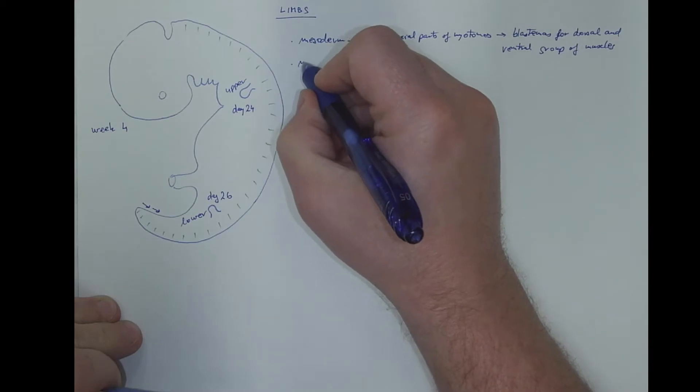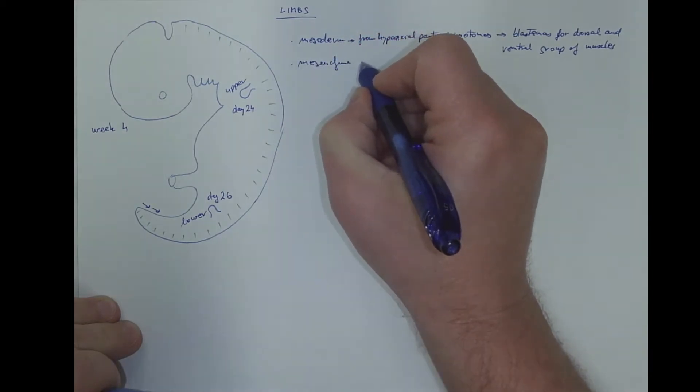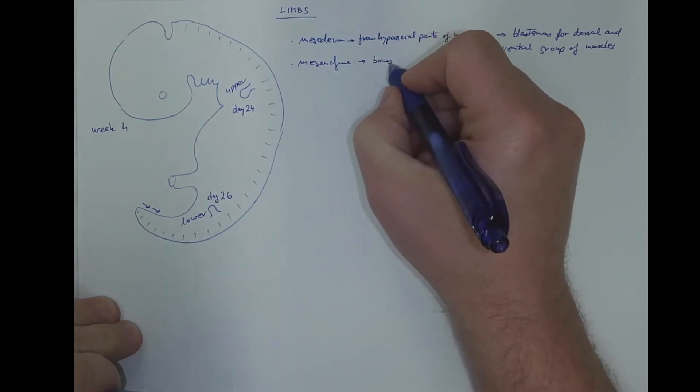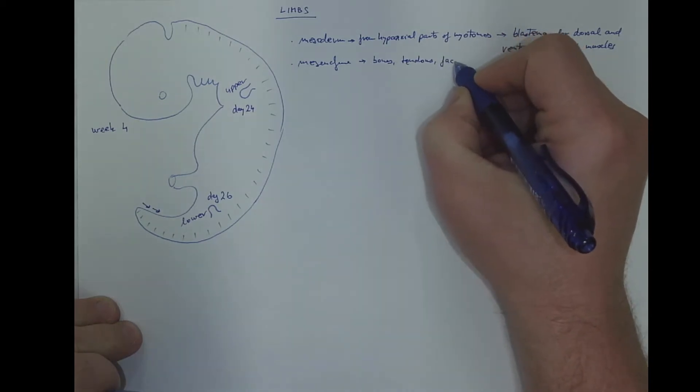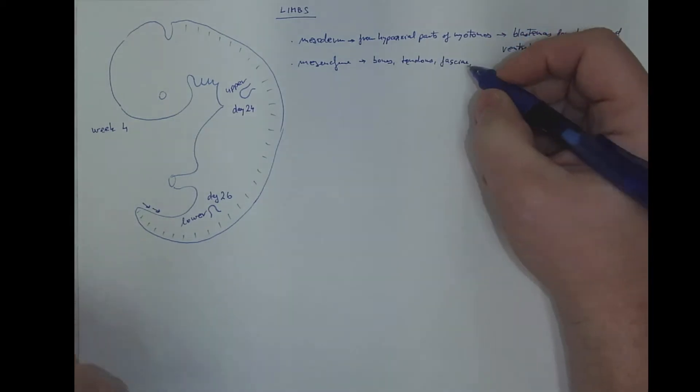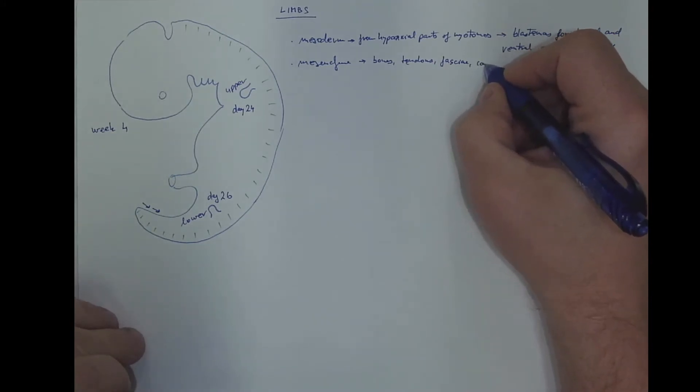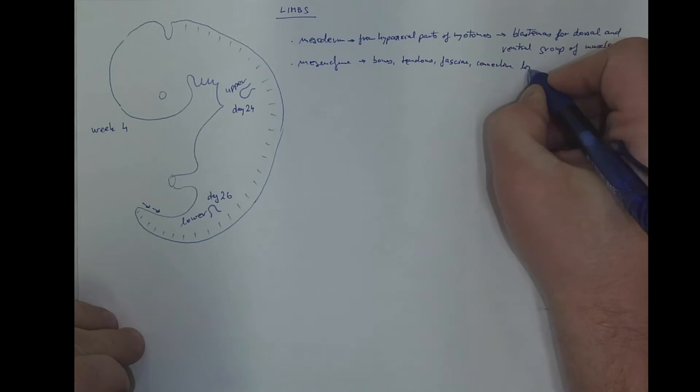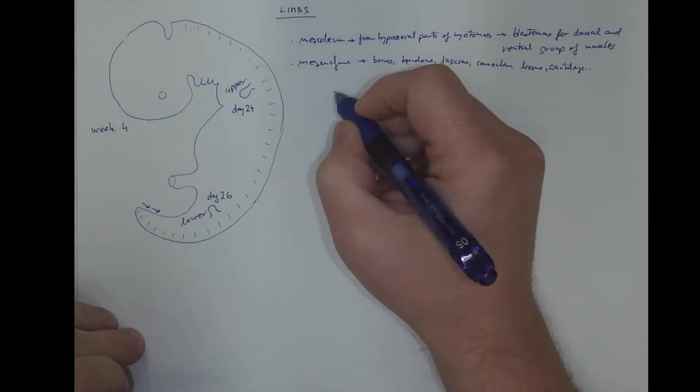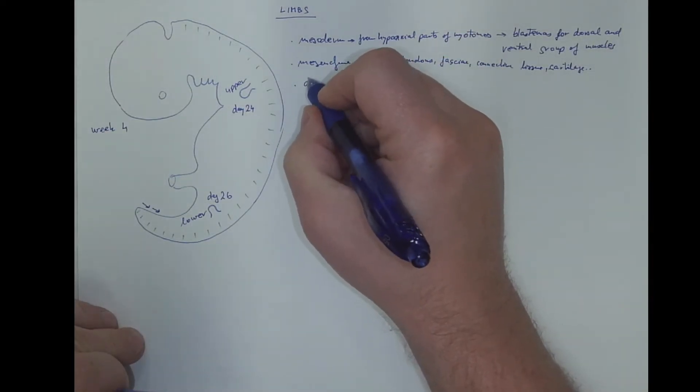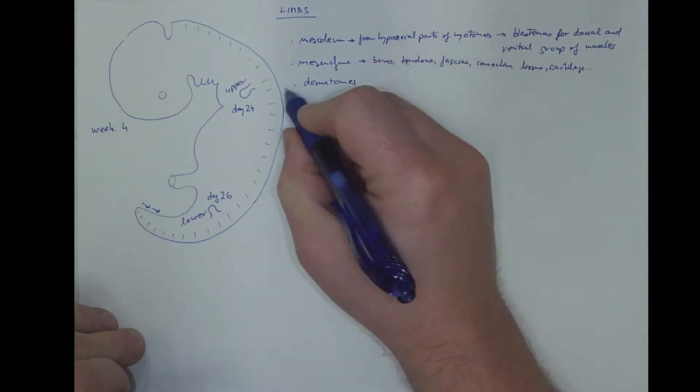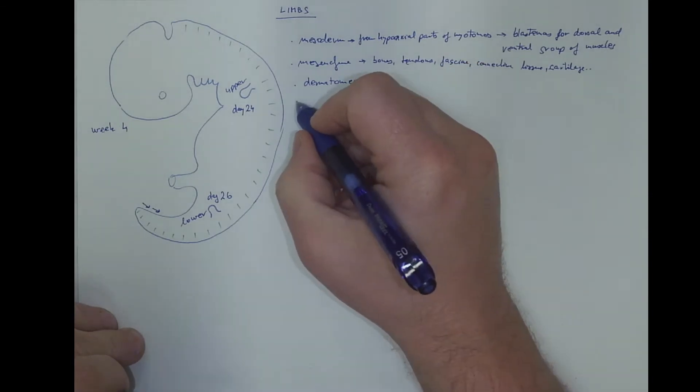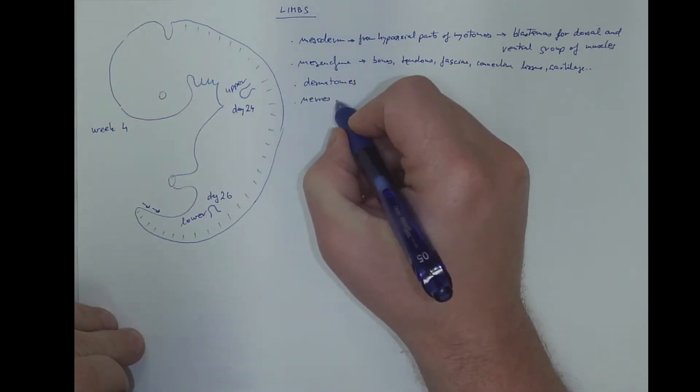There is also mesenchyma that will give rise to the bones, tendons, fascia and connective tissue, cartilage, etc. There are also dermatomes migrating into the primordium forming the dermis, the nerves and blood vessels.